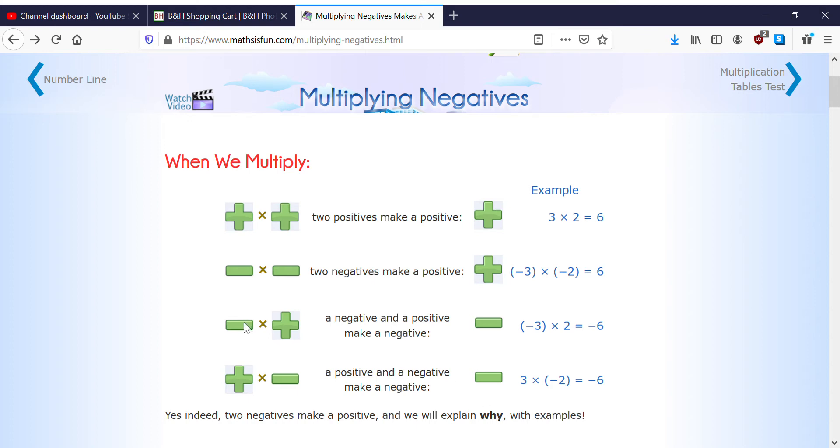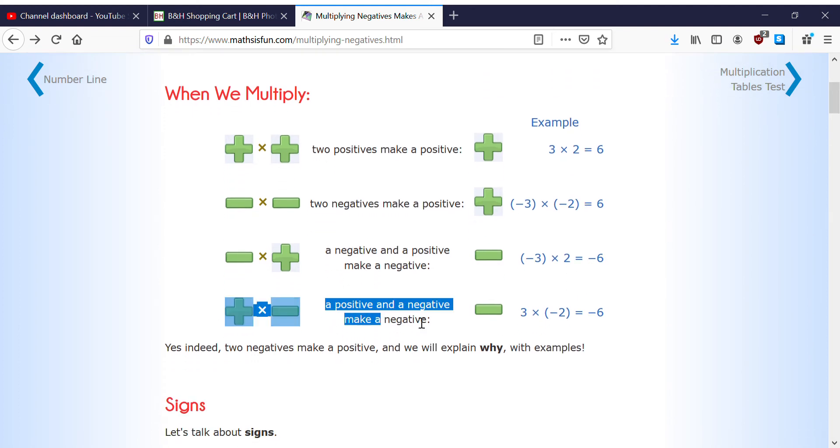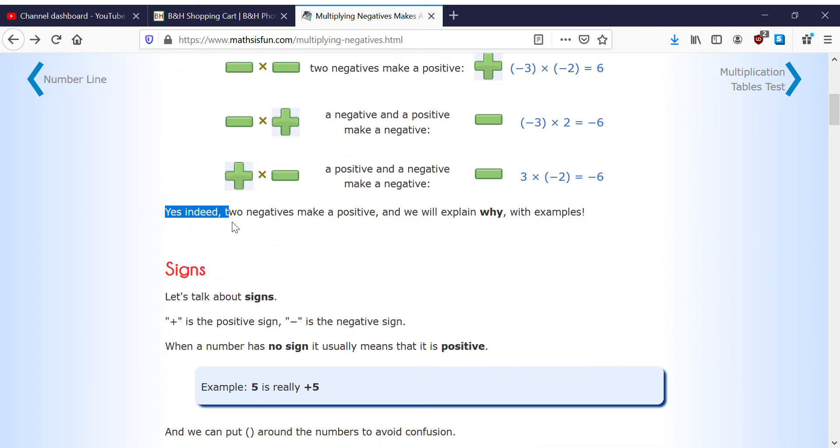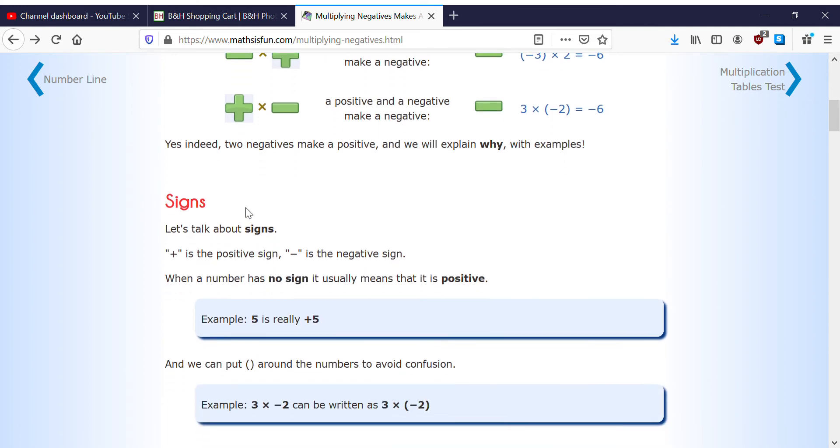And then there's a negative and a positive makes a negative. Since negative 3 times 2 equals negative 6. And the same thing over here - yes indeed, two negatives make a positive, and we'll explain that with example signs.